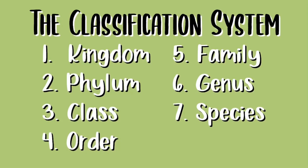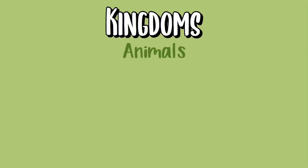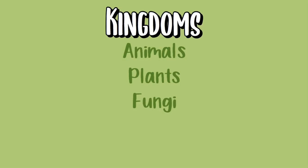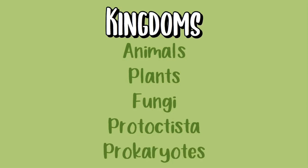A mnemonic to memorize this is: "Kings Play Chess On Fine Green Silk." There are five kingdoms: animals, plants, fungi, protoctista and prokaryotes.